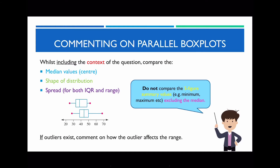You need to include the median value, which is the center, the shape of the distribution, the spread — which is the IQR and range — as well as the outliers, and also provide the context of the question. If the question is talking about test scores, make sure you include the words 'test scores' in your description. Whenever you're actually making comparisons, you never talk about the five-figure summary. For instance, don't say the minimum of this box plot is greater than the minimum of this box plot — that's a very superficial level of comparison. Instead, compare the spread, shape, center and outliers. The median is the exception, since center is measured by the median.